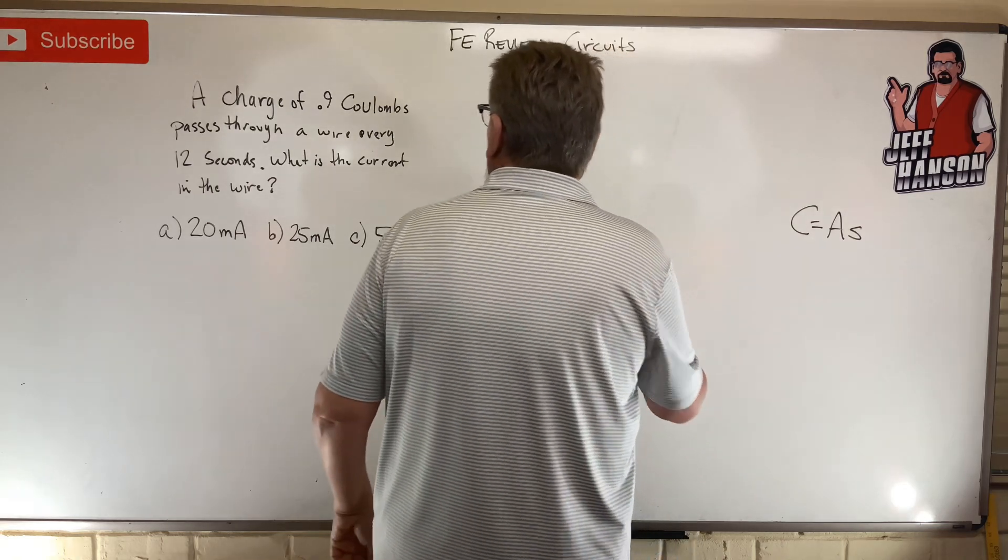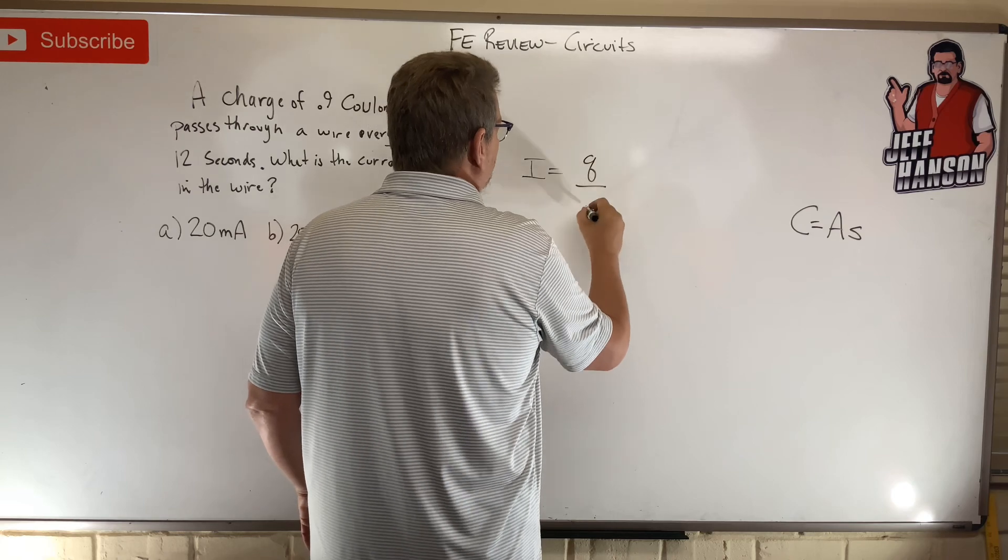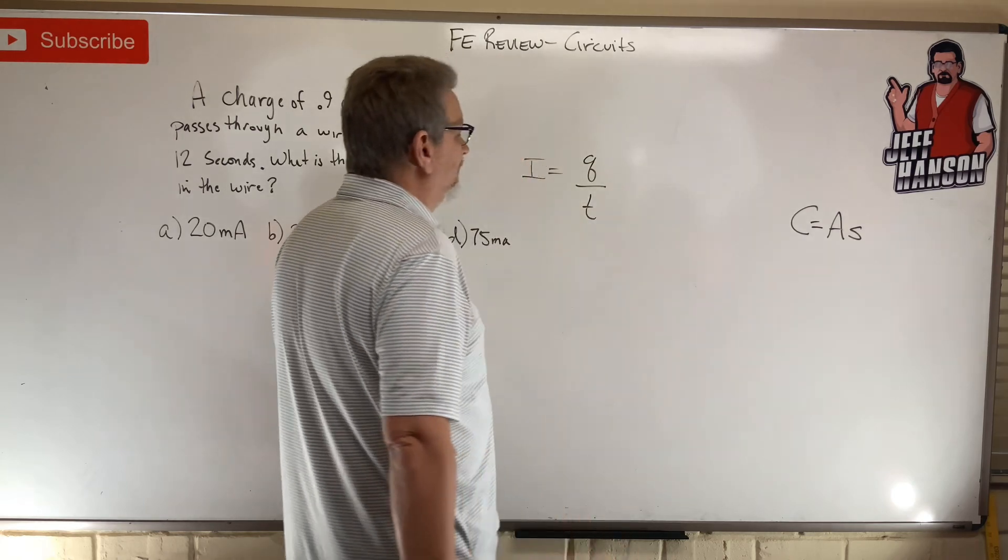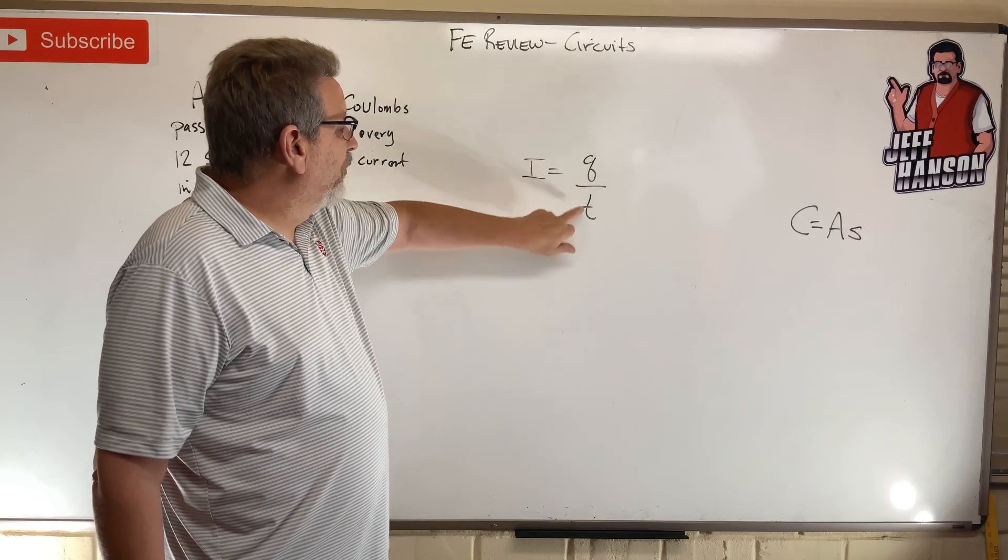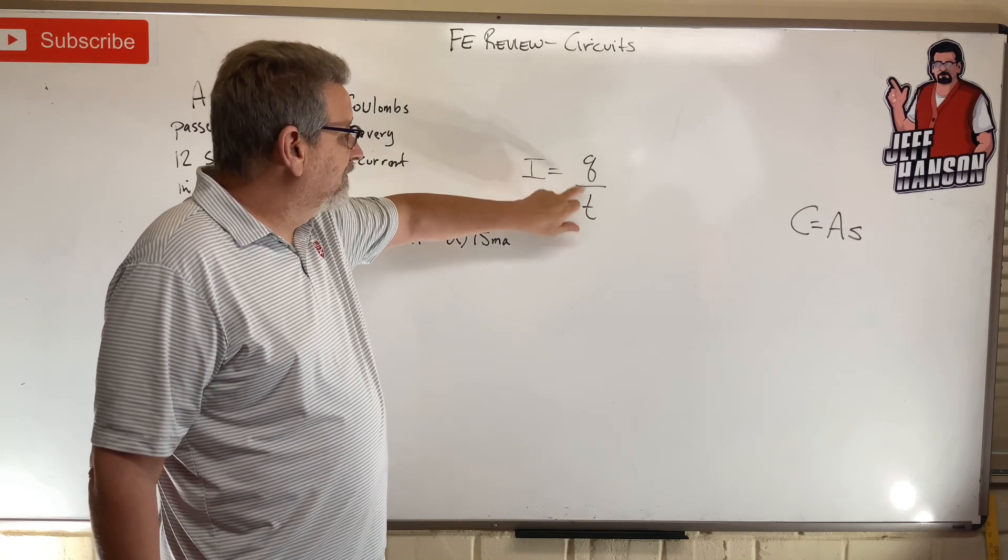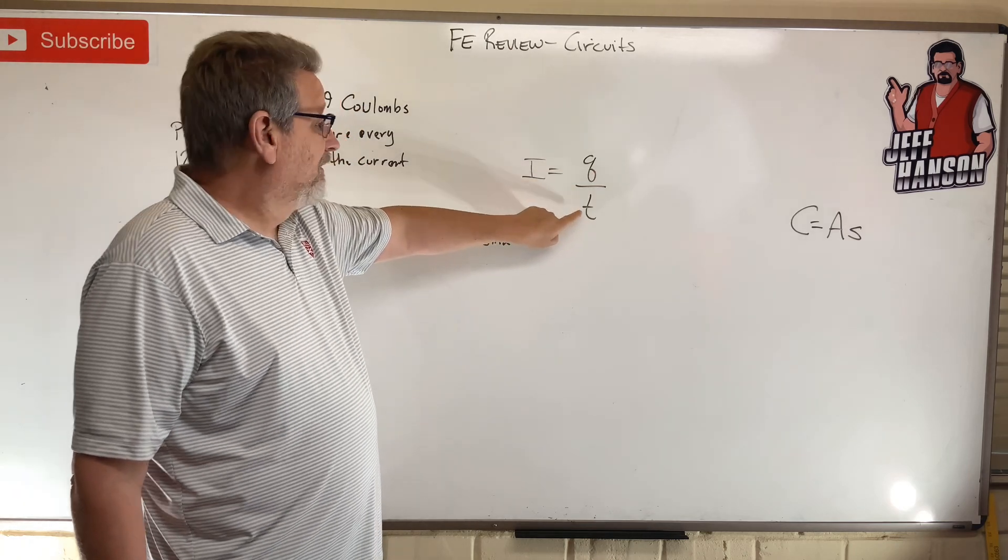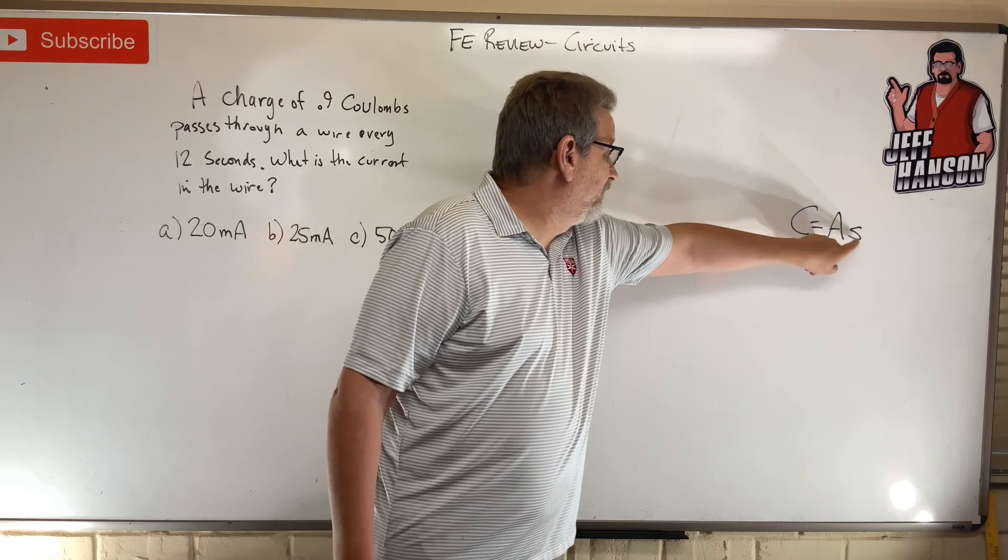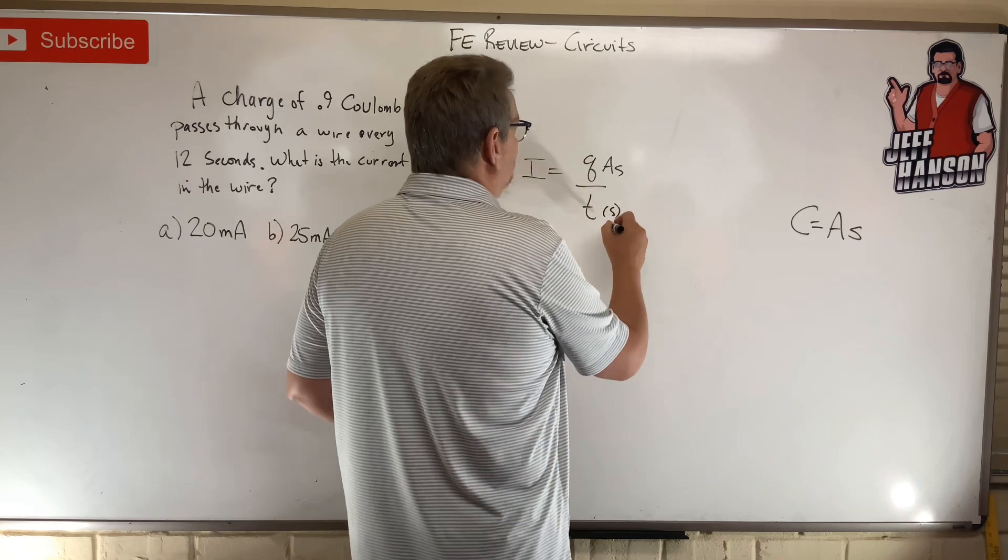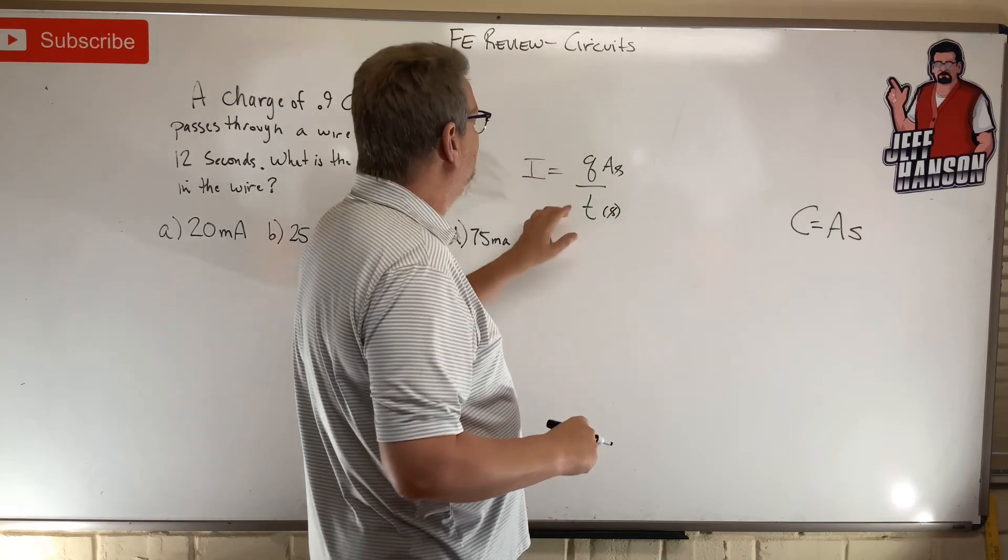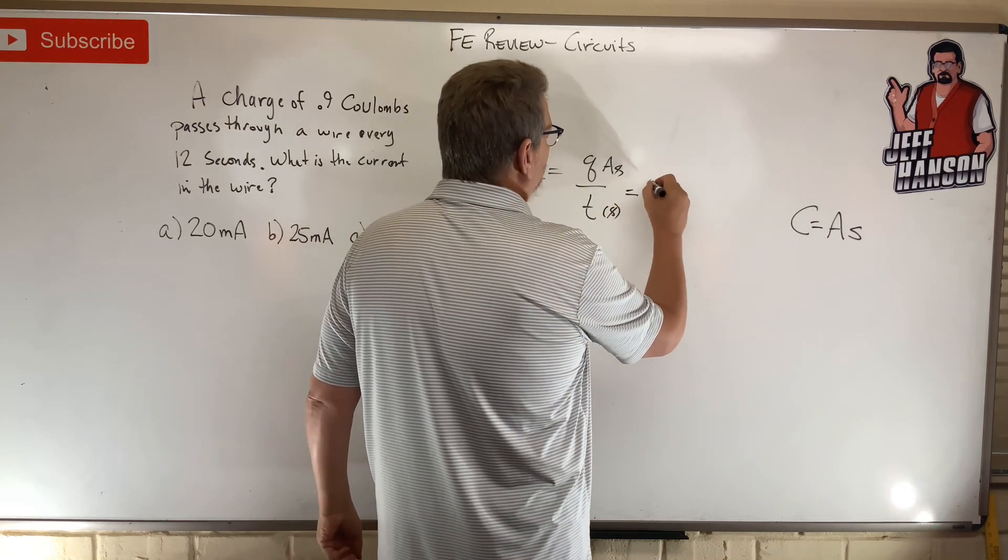Here's what we're going to do. I is equal to q divided by t. Current is the flow rate of the electricity. The coulomb tells you how much flow. Then divide that by time. Amperes times seconds divided by seconds - the seconds are going to cancel out and give me an answer in amperes.